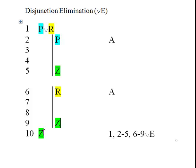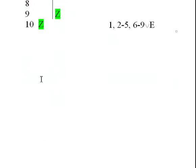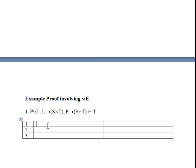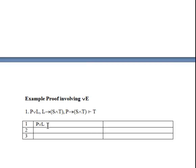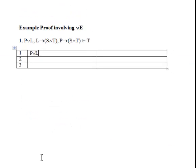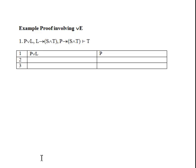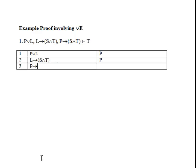Now to provide an illustration of this, we'll walk through one example. So in this case we have premise 1, which is a disjunction P or L. We'll indicate that as a premise. We have a conditional L arrow S and T, which is also a premise. And we have the premise P, if P then S and T. And what we want to show is that T follows.